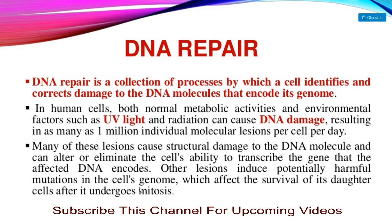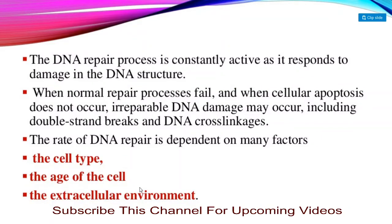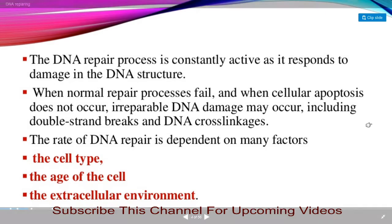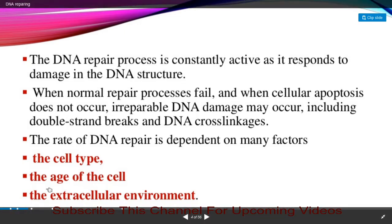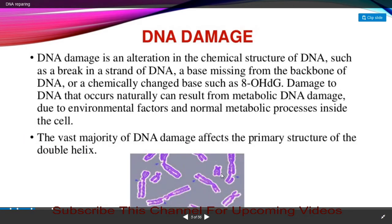The DNA repair process is constantly active in the cell and responds to any damage in the DNA structure. It identifies damage occurring during replication or normal cellular processes. When normal processes fail and cellular apoptosis — that is, the programmed death of cells — does not occur, irreparable DNA damage can result, including double strand breaks and DNA cross-linkages. The rate of DNA repair depends on many factors: cell type, age of the cell, and extracellular environment.